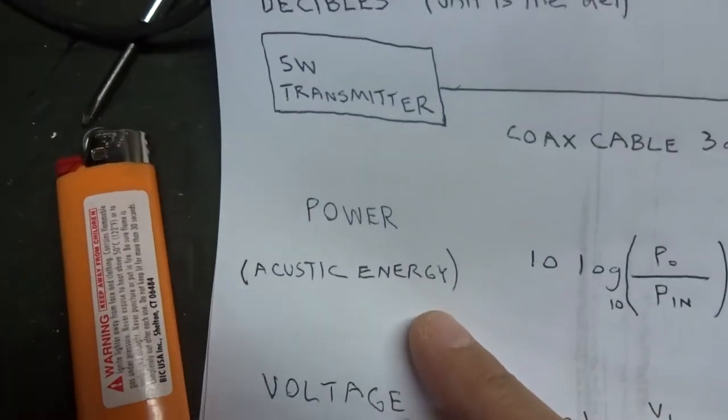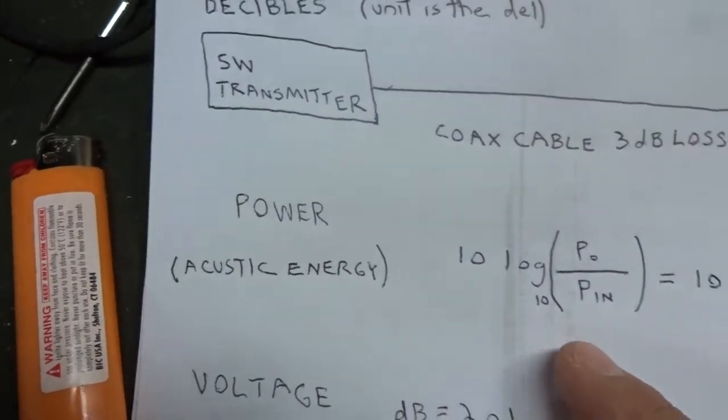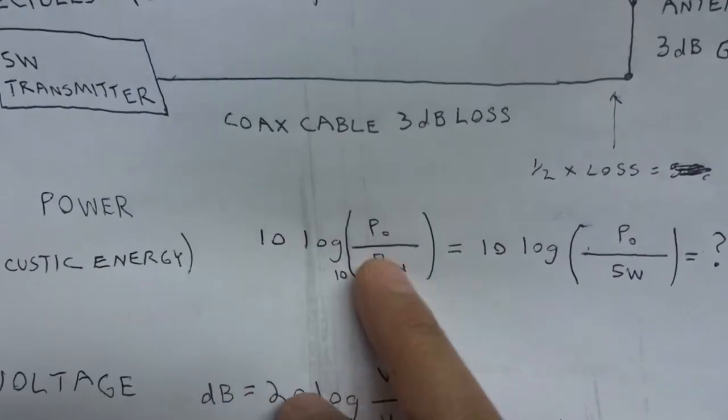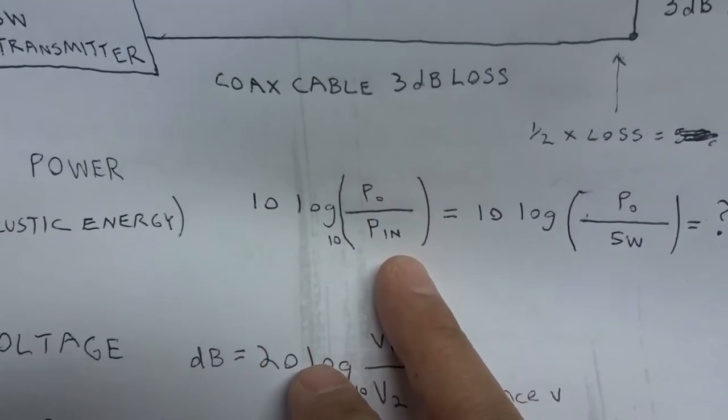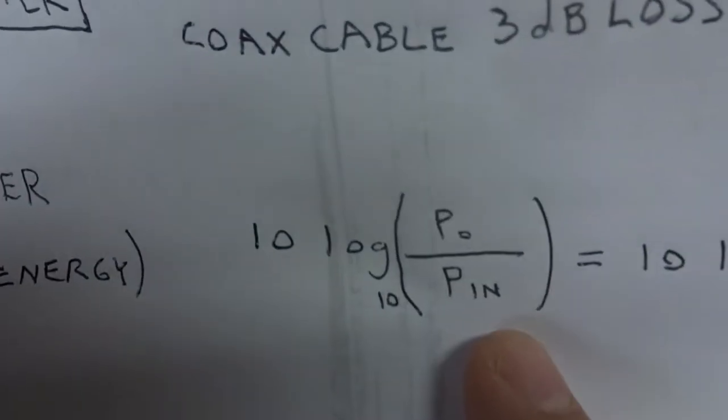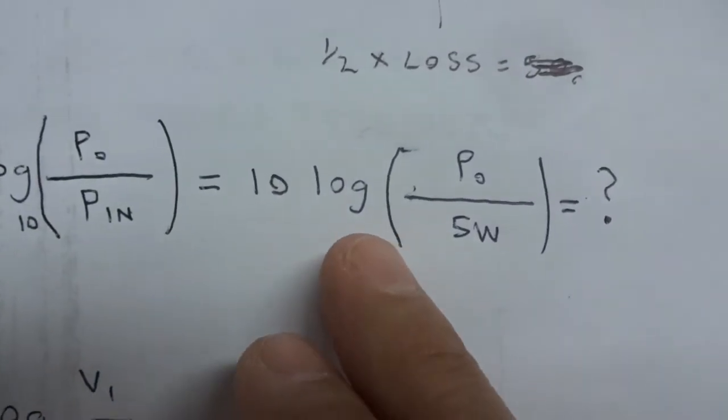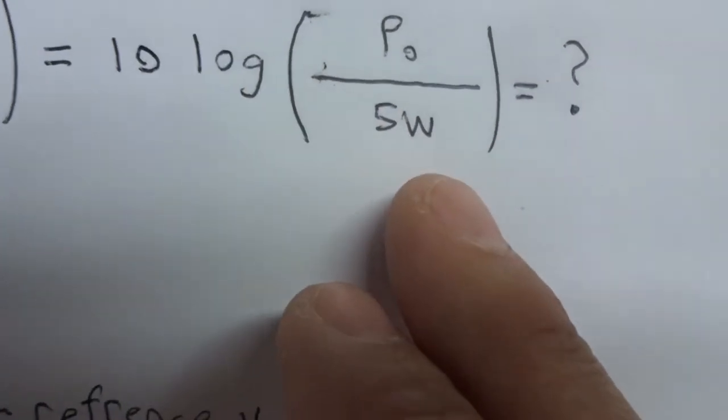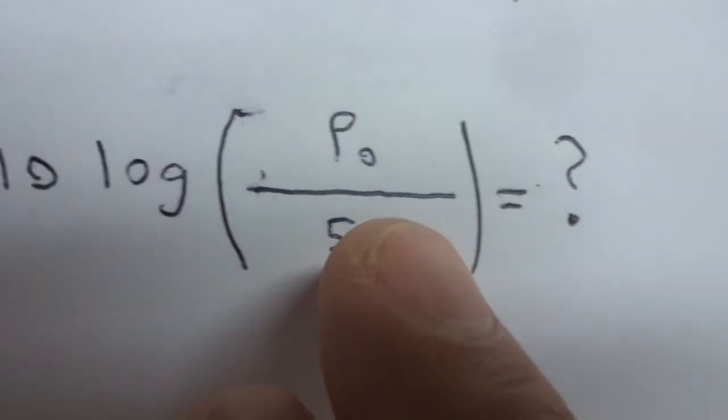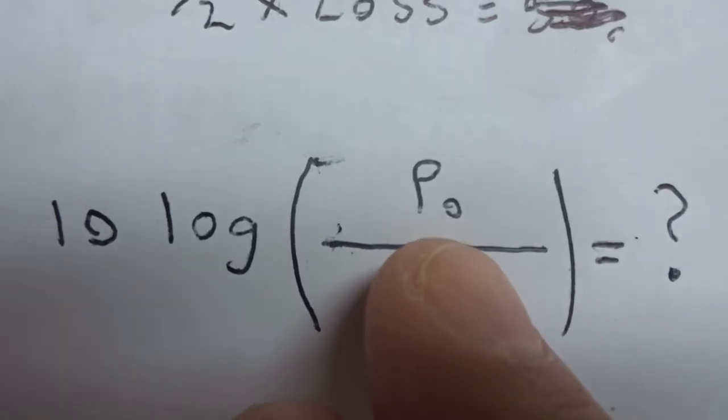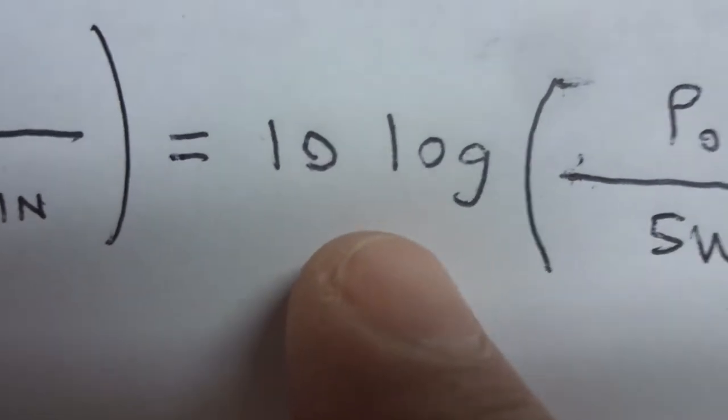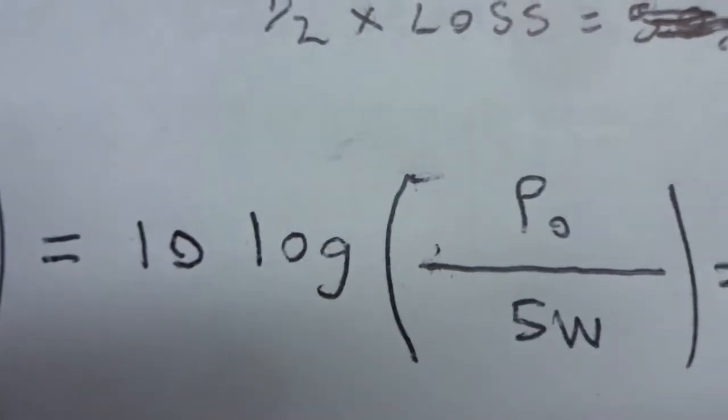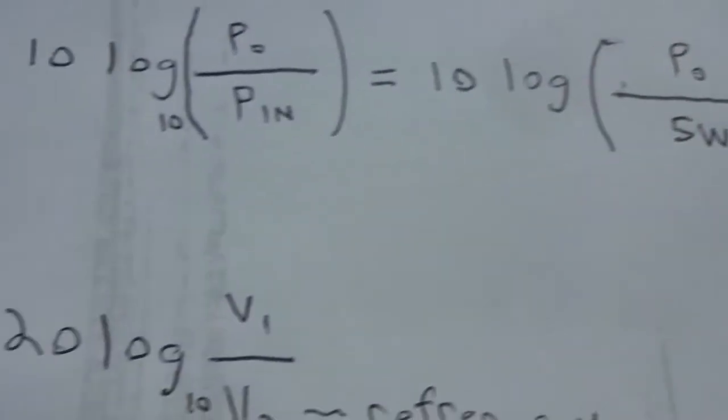Power and acoustic energy. The formula for a decibel is 10 times the base 10 log of the power output divided by the power input. It is simply a ratio, which equals 10 times the base 10 log of power, in our case, over 5 watts. What would that equal? Notice in this equation we have only one unknown variable, and you will be able to solve for that one unknown variable easily yourself with a good understanding of algebra.